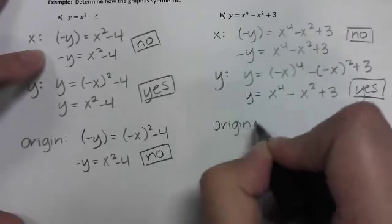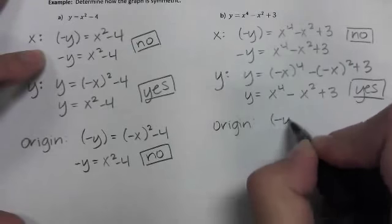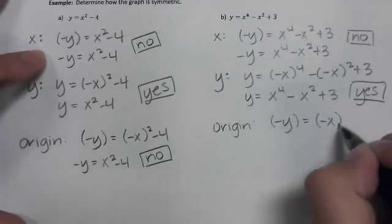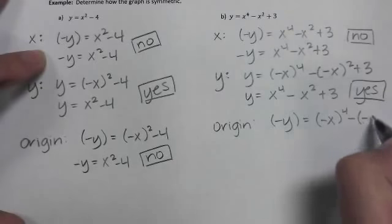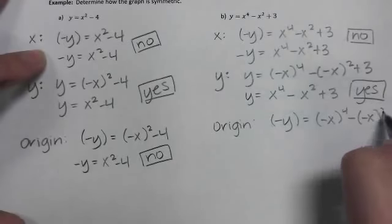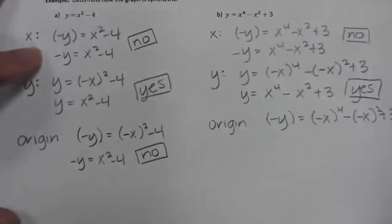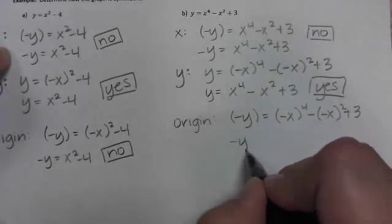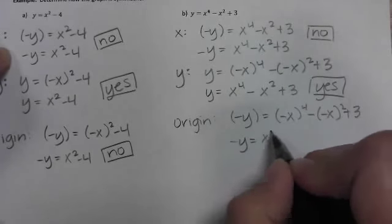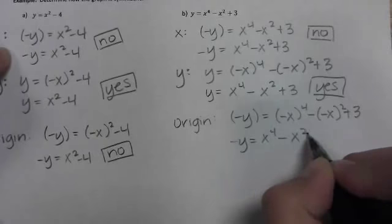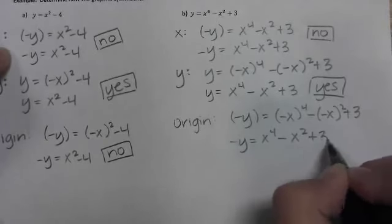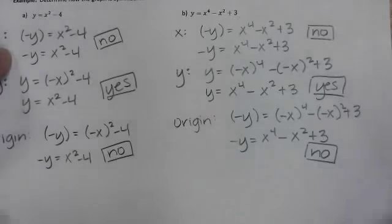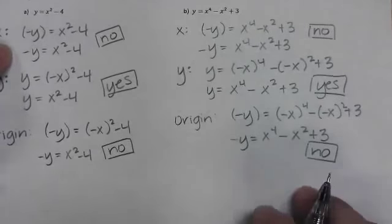Finally, checking symmetry to the origin: the right side simplifies to what we'd want, but we still have a negative y on the left side, which means it doesn't match the original — so no, not symmetric to the origin.